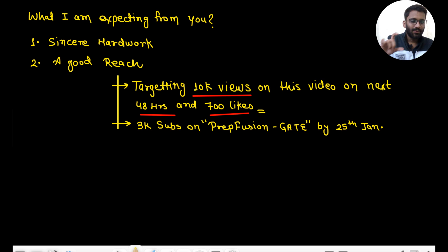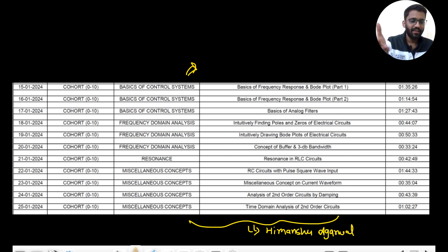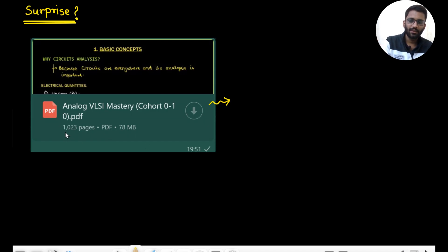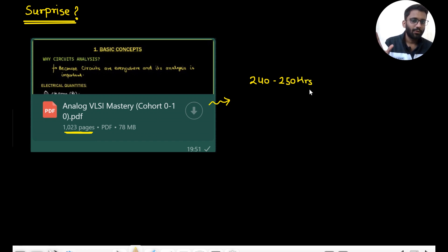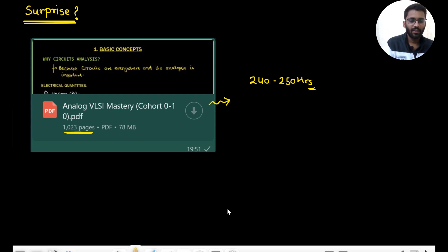Why am I asking for this? Because this took me really a lot of effort. I am currently working as well. This is 1023 pages — can you imagine? And this is 60 hours of content. To make 60 hours of content, you need to put at least 240 to 250 hours of work — making slides, processing what to teach, everything. And once you see the notes, you will realize how neatly I have written, using different colors of pens, written so neatly that everyone can understand.